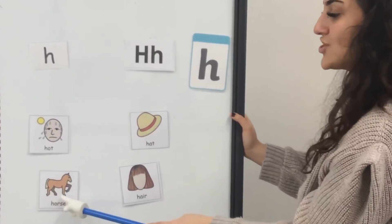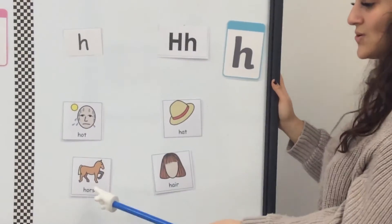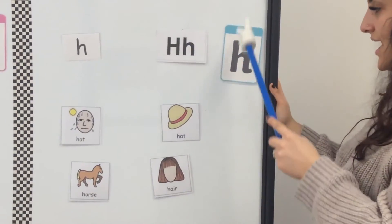Down here I've got H for horse. Let's all sign horse. And horse begins with the letter H.